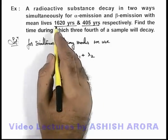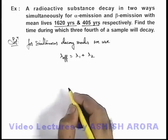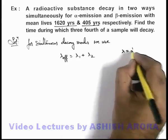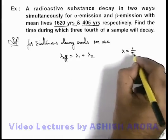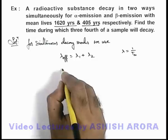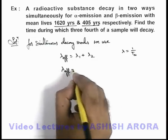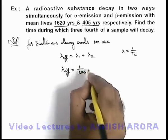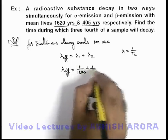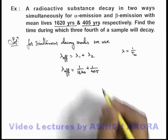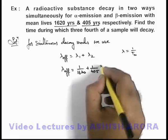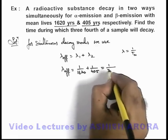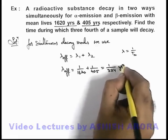With mean lives of 1620 and 405 years, and since the decay constant is the reciprocal of the mean life, the effective decay constant of the element will be 1/1620 plus 1/405. On simplifying, we get 1/324 per year.